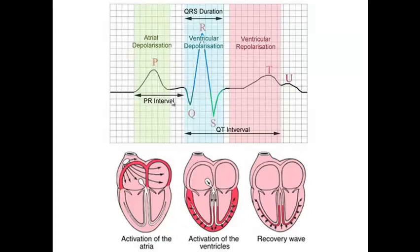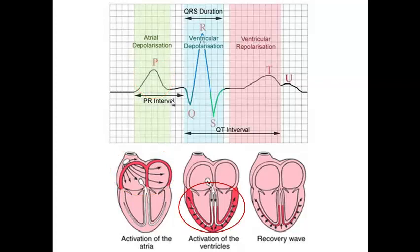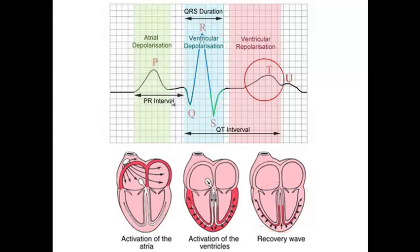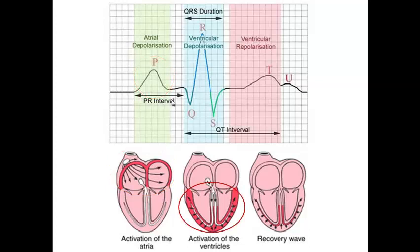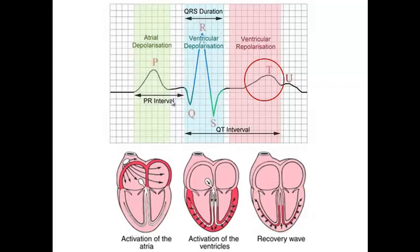Each waveform in the ECG represents a specific event. The P wave represents atrial depolarization — the first event in the electrical cardiac cycle. The QRS complex represents ventricular depolarization. The T wave represents ventricular repolarization. So in summary: P wave = atrial depolarization, QRS = ventricular depolarization, T wave = ventricular repolarization.